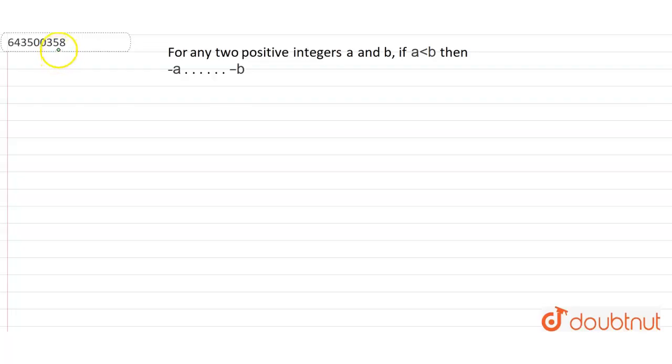What is it giving us? For any two positive integers which are a and b, they gave us the condition when a is lesser than b, then minus a is lesser than minus b or greater than or equal to. So let's find it out.